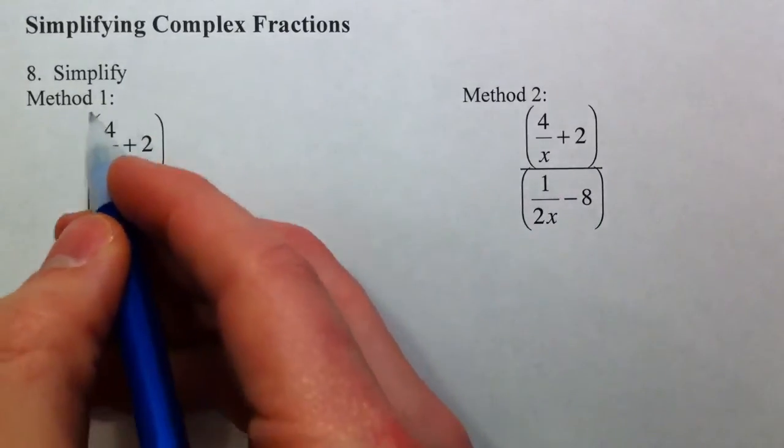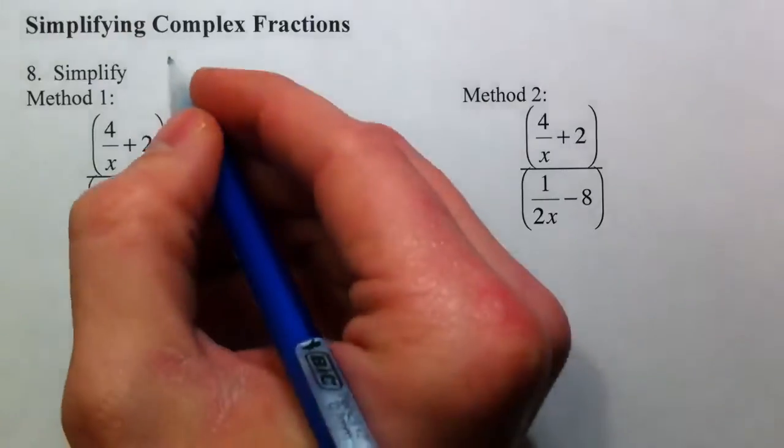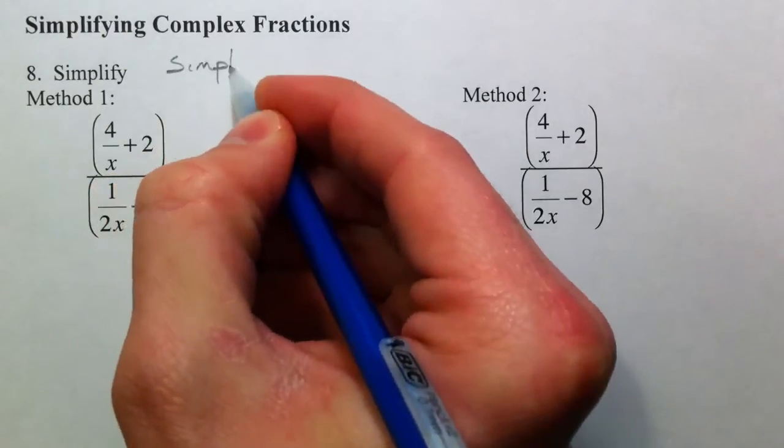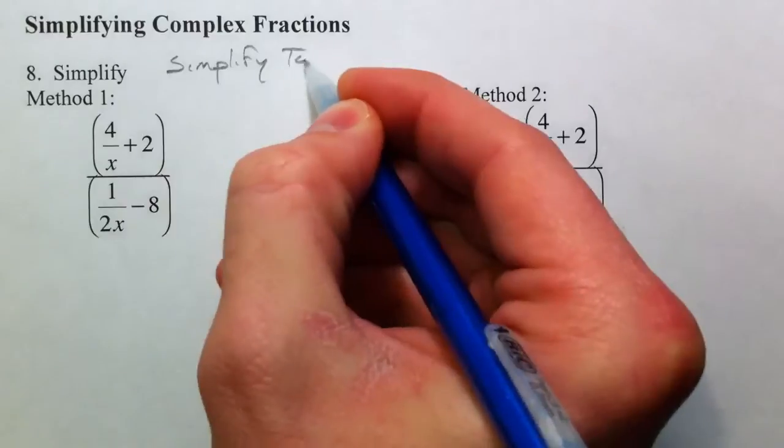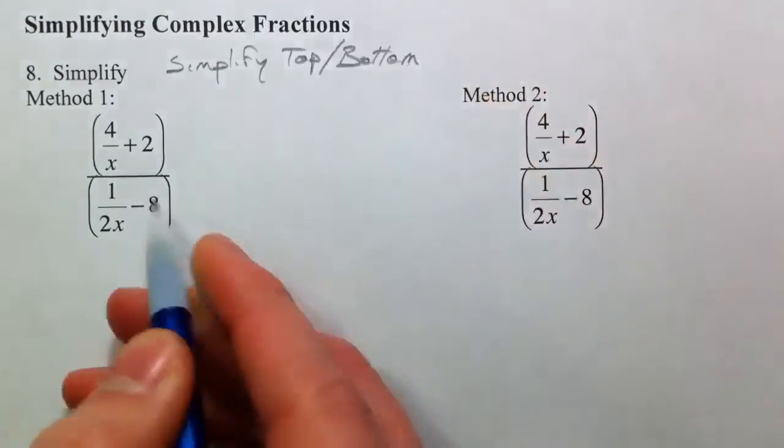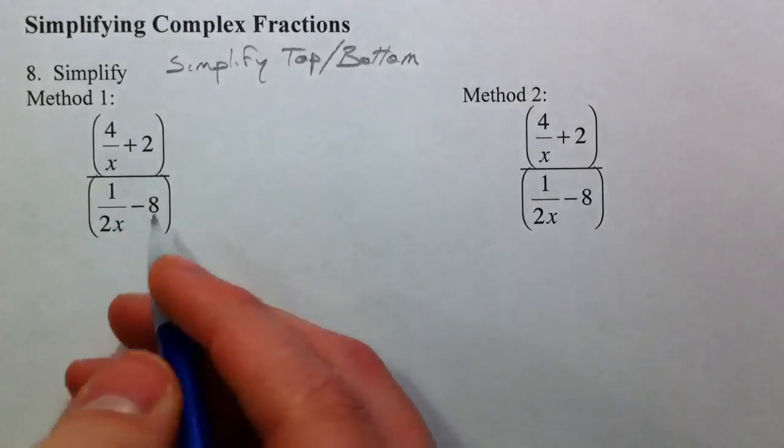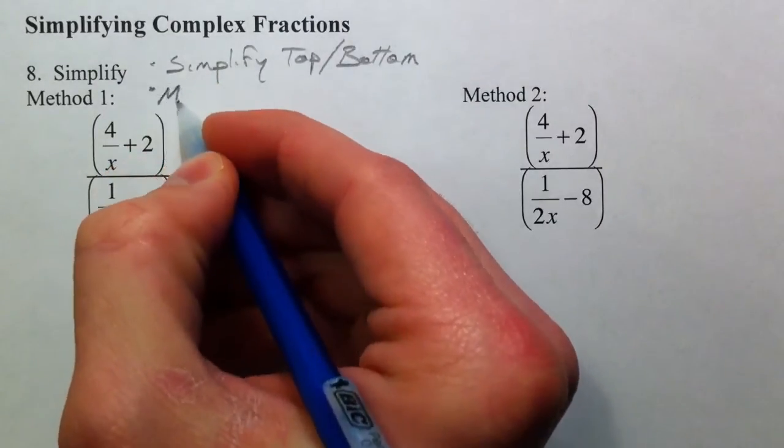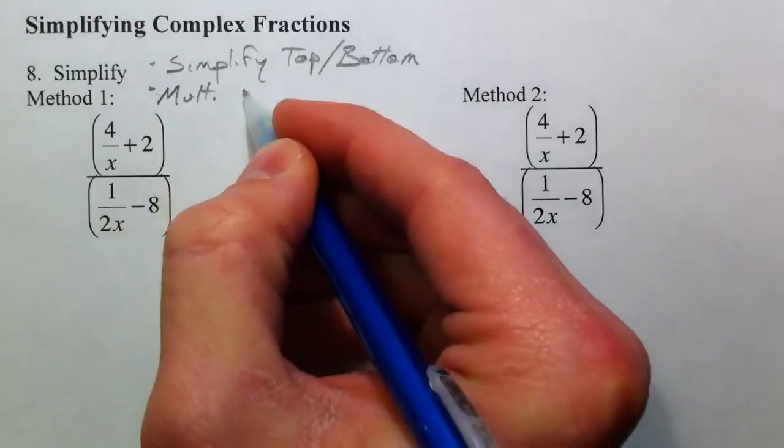First method is we're going to simplify the top, simplify the bottom, and then what you'll have is a fraction over a fraction. And so then what we'll do is multiply by the reciprocal, because that's what dividing fractions are.